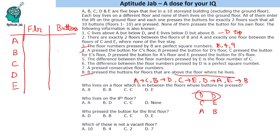Since B presses button 4 and 9, and B presses the button for D's floor, D cannot be on floor 4. With five people and D at the top, D must be on floor number 9.